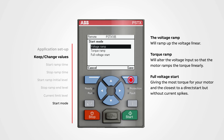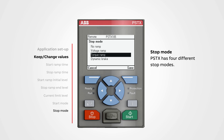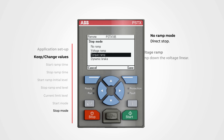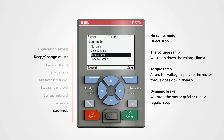Stop mode: to change the setting, push edit. PSTX has four stop modes. The most common is the no ramp mode, where the application coasts to stop. The voltage ramp will ramp down the voltage linearly and works well for applications like conveyor belts. The torque ramp alters the voltage input so the motor torque goes down linearly — this mode is vital for the water industry, particularly for pump applications. PSTX has a unique torque algorithm that goes through a feedback loop creating an optimized stop for pump applications. The dynamic brake mode will stop the motor quicker than a regular stop and is suitable for applications with a big moment of inertia and an extended stop time, such as a sawmill where the saw blade can spin for a very long time. Use the navigation buttons to change the setting, then push save.